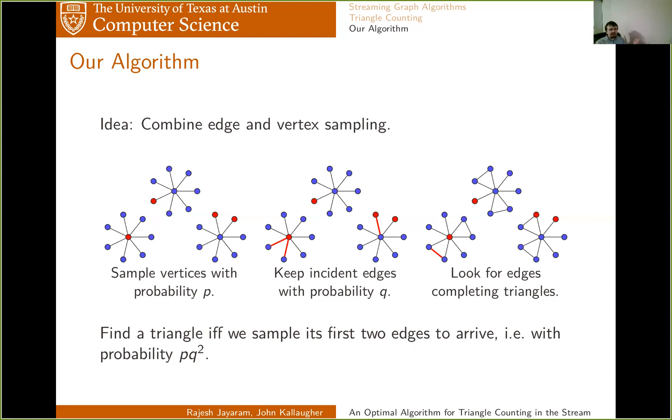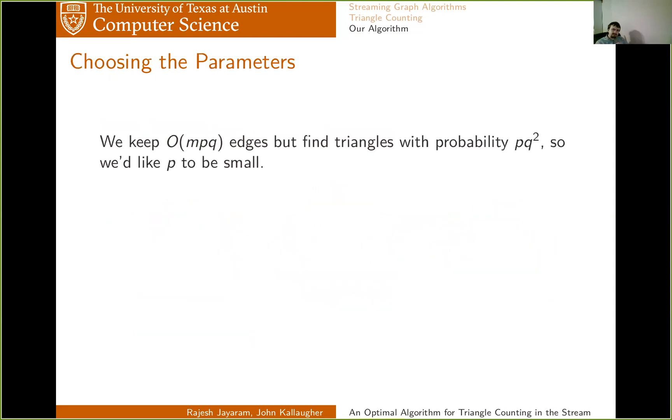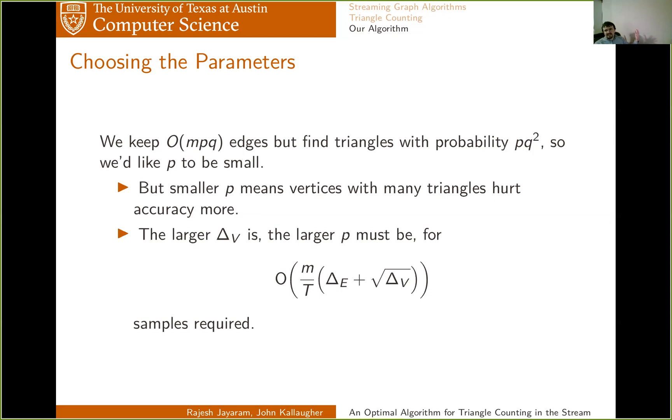So how are you going to set P and Q in this? Well, observe that you're now keeping each edge with probability PQ or 2PQ, but you're finding triangles with probability PQ squared. So that suggests you want P to be really small because you pay more of a penalty for Q being small in your probability of finding triangles. But the problem is that the smaller P is, the more those vertices with many triangles hurt you. Because the more your triangle count depends on whether you were lucky enough to sample some high degree vertex. And so the larger delta V is, the larger you're going to need to make P. And it turns out that when you set P and then Q accordingly, what you end up doing is keeping M over T times delta E plus square root delta V samples.